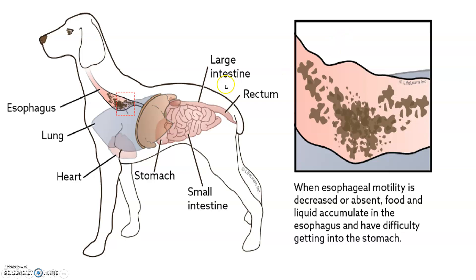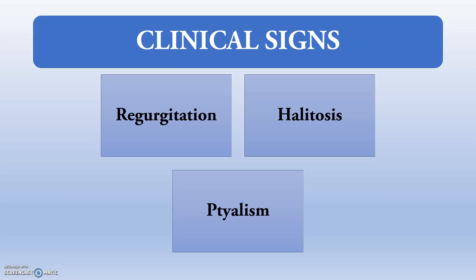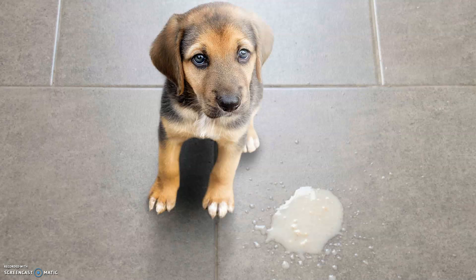Whenever there is dilatation or abnormal/decreased motility of the esophagus, food and liquid accumulate in the dilated esophageal segments and have difficulty entering the stomach. The main clinical signs are regurgitation, halitosis (very bad smell), and ptyalism (excess salivation). A classical presentation of congenital megaesophagus is that when puppies reach weaning age and begin eating solid food, they start to regurgitate.